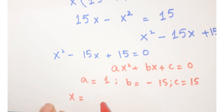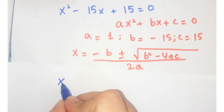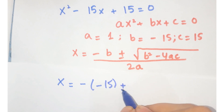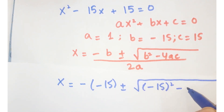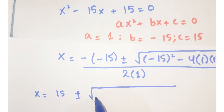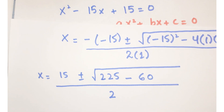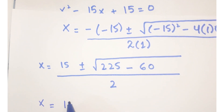Applying the quadratic formula: x equals minus b plus or minus square root of (b² minus 4ac), all over 2a. Putting in the values: x equals 15 plus or minus square root of (225 minus 60), all over 2, which gives x equals 15 plus or minus square root of 165, over 2.